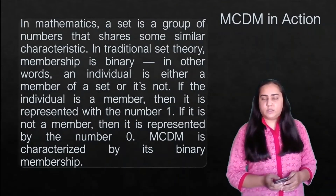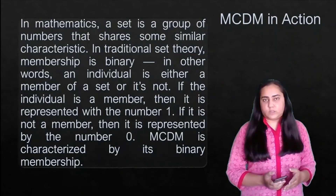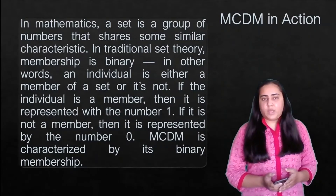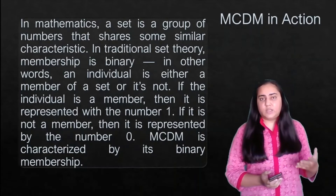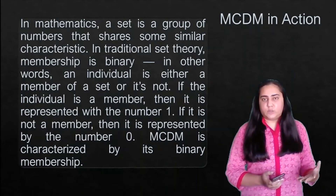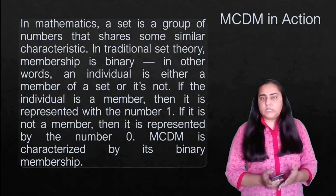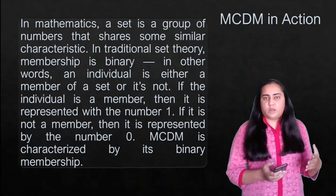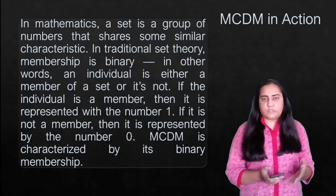In mathematics, a set is a group of numbers sharing similar characteristics. In traditional set theory, membership is binary — an individual is either part of the set or not. If a member, it's represented by one; if not, by zero. MCDM is also characterized by this binary membership: a criterion is either satisfied or not satisfied, nothing in between — zero or one.